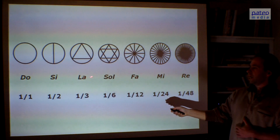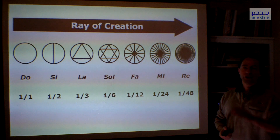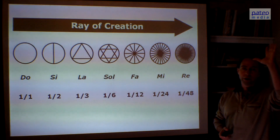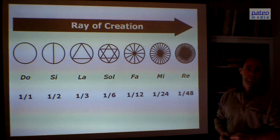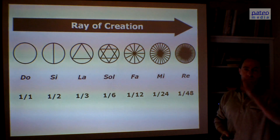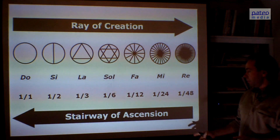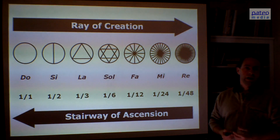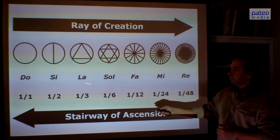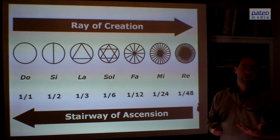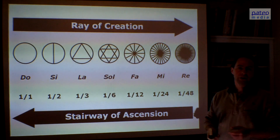This process from Do, Si, La, Sol, Fa, Mi to Rei — that is the Ray of creation. The creation starts at the top, at the oneness, at the wholeness, and it goes all the way down to the level of Rei. That's the Ray of creation, from top to bottom. But the other way around, from bottom to top, is the stairway of ascension. That is the stairway we can take with our consciousness — we can create, at the end, the consciousness of the whole, of wholeness. That is what we can do here in our incarnations on this planet.